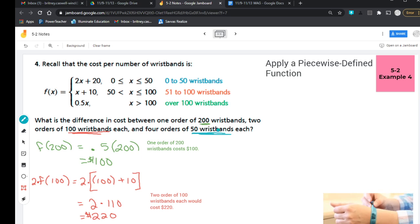So now our last one, right? They're buying four orders of 50 wristbands. So 50 wristbands would fall into this top tier. So I'm going to need to find f(50), but I'm doing four orders of it. So I'm multiplying that amount by four.